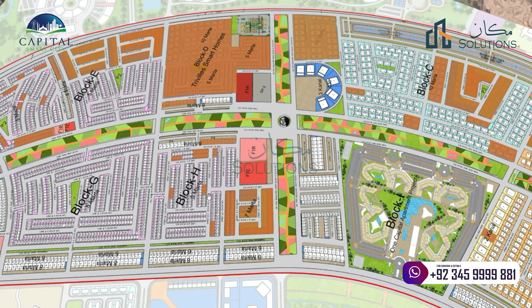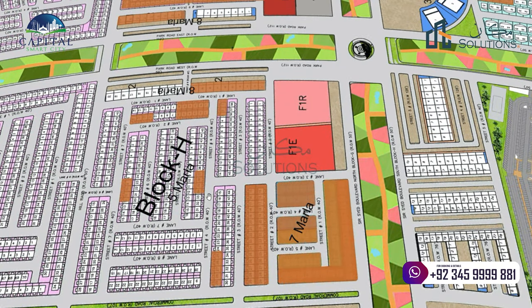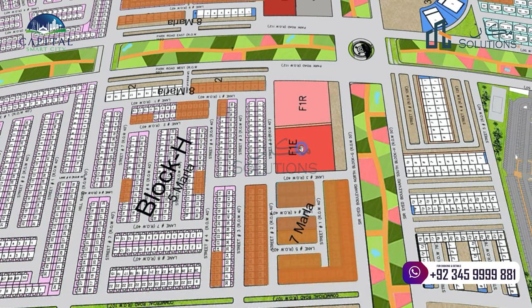If we talk about the plot sizes, H Block basically has 2 sizes of residential plots and 2 sizes of commercial plots. Residential plots are 5 marla — 25 by 45 yards, which is 125 square yards — and residential plots are 7 marla — 30 by 53 or 30 by 55, which is 175 square yards. There are also two special plots in red color: one is F1E, which is a school plot, and F1R, which is a mosque plot.